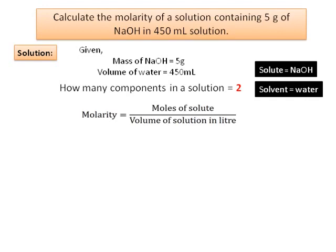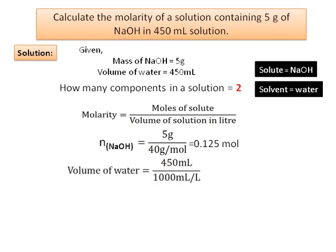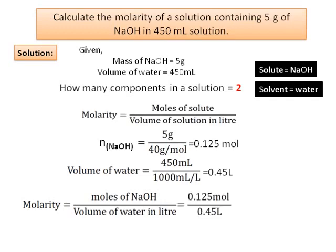Molarity equals moles of solute divided by volume of solution in liters. The amount of sodium hydroxide in grams must be converted to moles, and the volume in mL must be converted to liters. Using w/M: 5 g divided by 40 g/mol = 0.125 mol. Converting 450 mL to liters: 450 ÷ 1000 = 0.45 L.